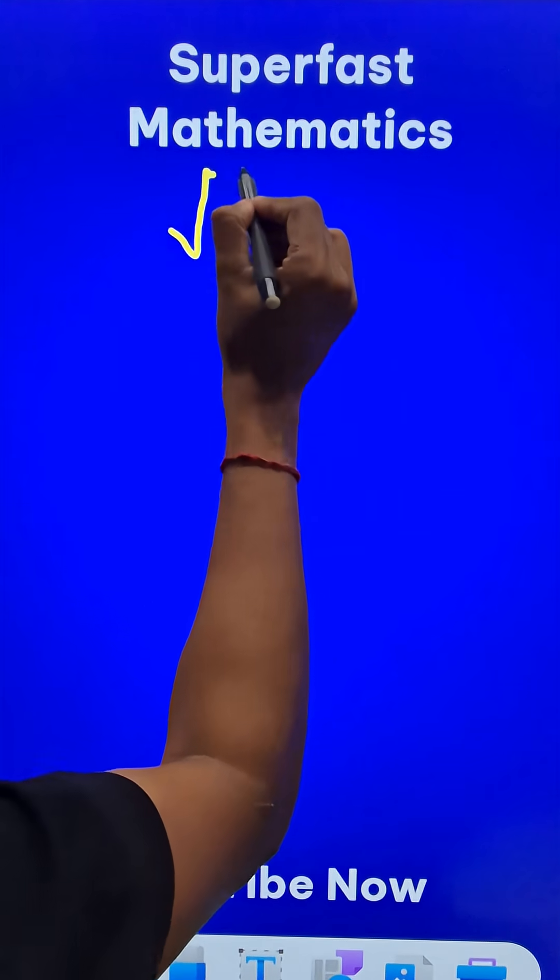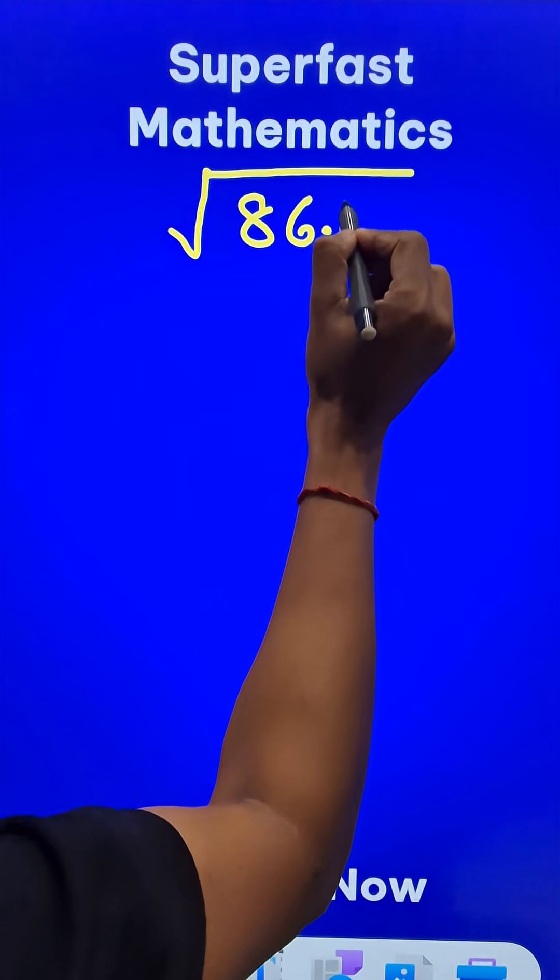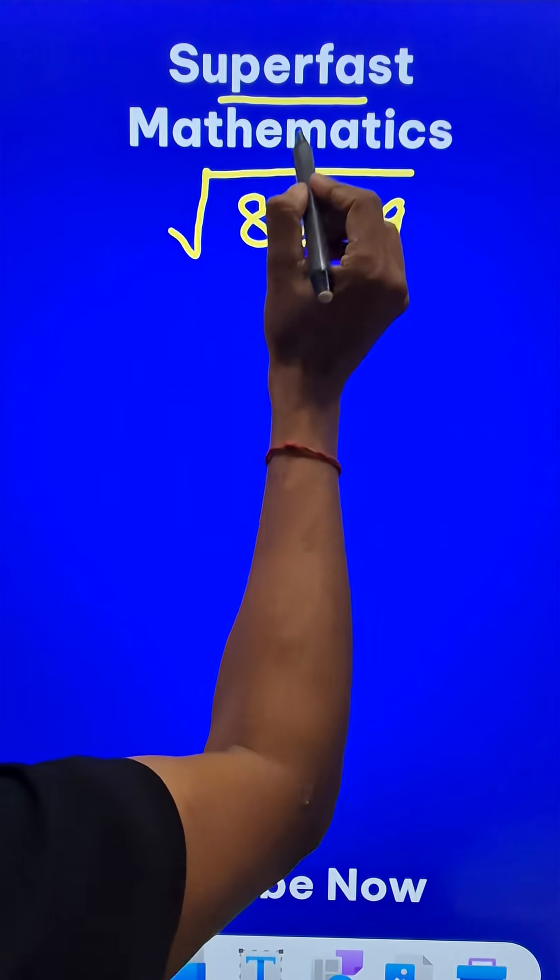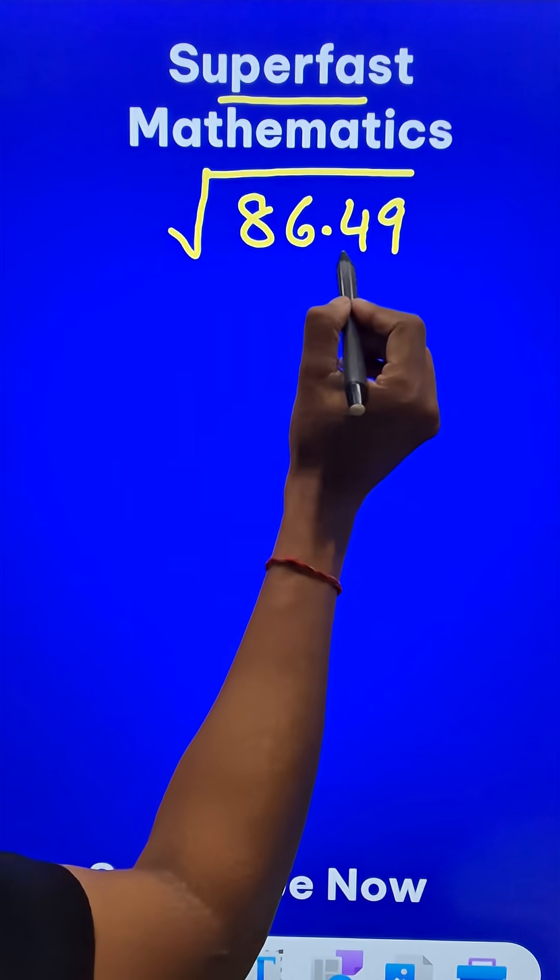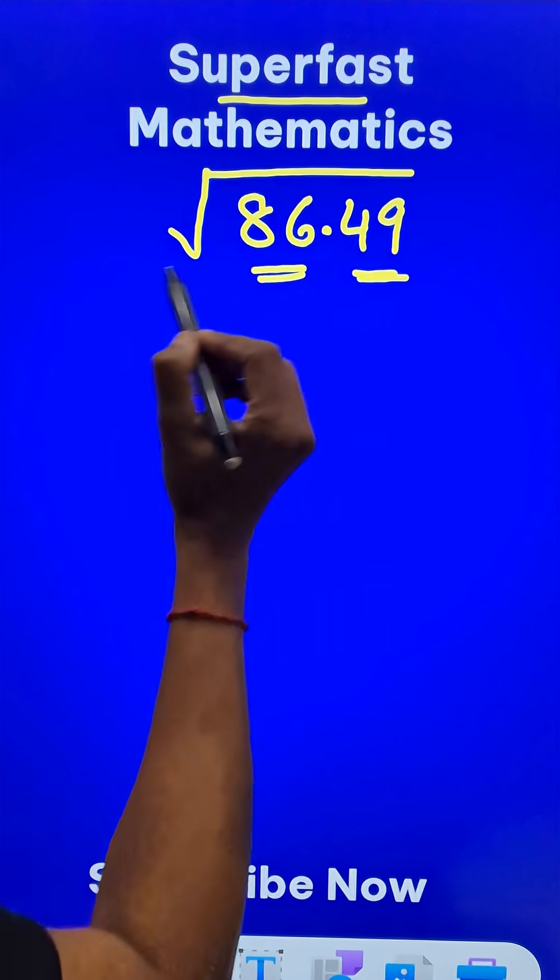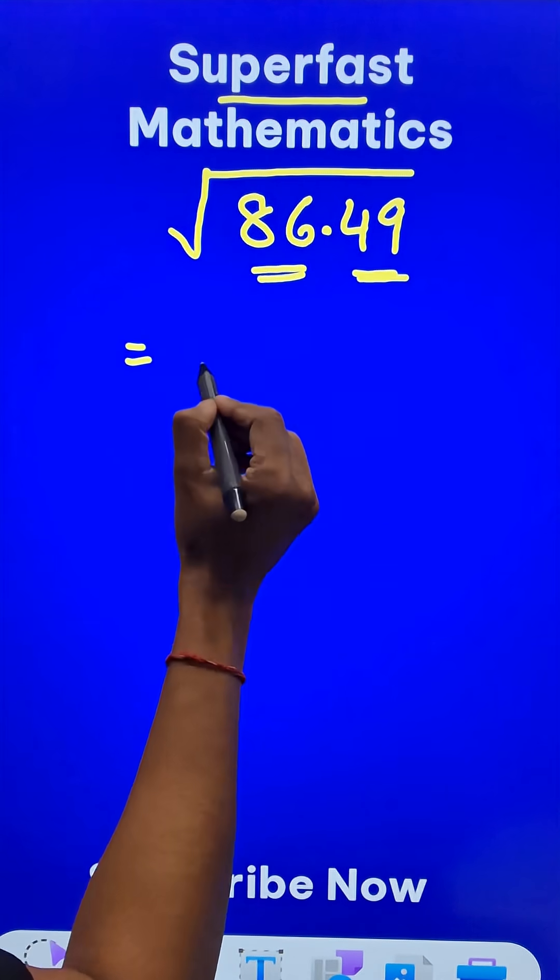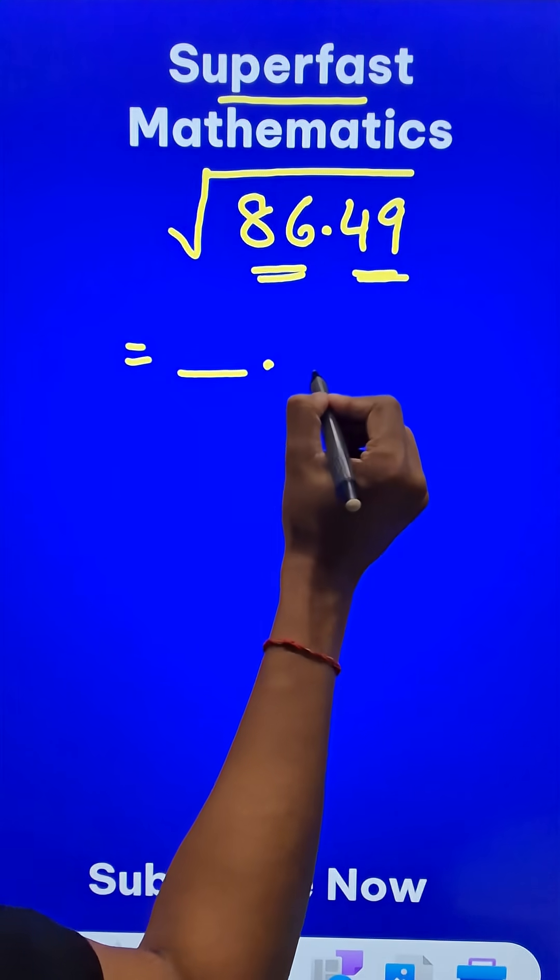Let us find the square root of a decimal number like 86.49 using this superfast mathematics shortcut. Now we have two digits after decimal and two digits before decimal. So your answer will have one digit before decimal and one digit after decimal.